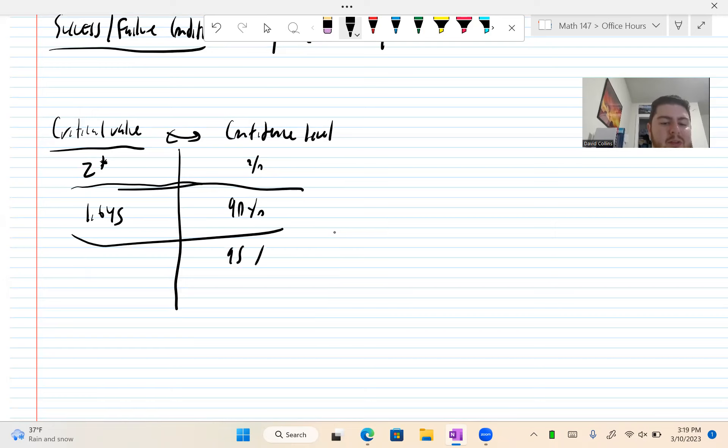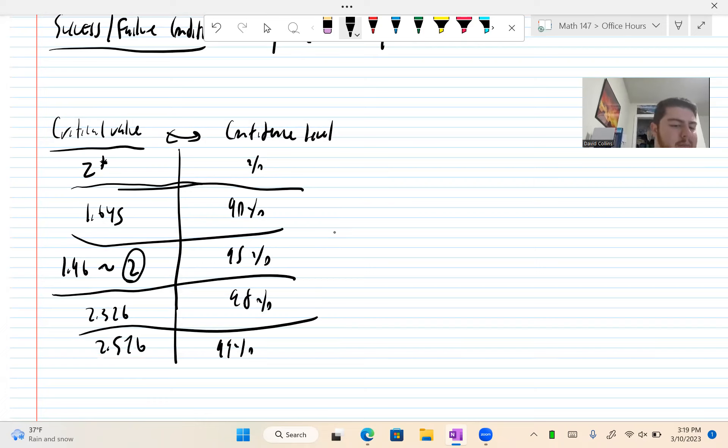Just to give you a few, just so you guys can write down on flashcards or memorize. 90% is 1.645. 95% is 1.96, however we are allowed to use 2. 98% is 2.326. And 99% is 2.576. So here are a few key ones.